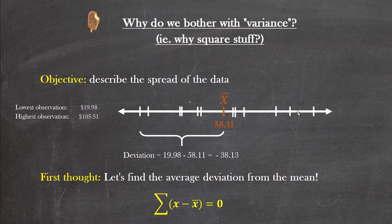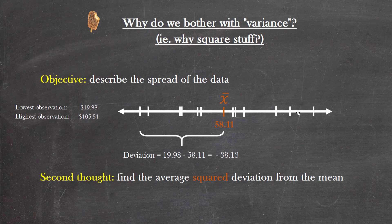Okay, so that's not going to work. So what can we do instead? Well, here's a second thought: let's find the average squared deviation from the mean. You only need a very basic understanding of mathematics to appreciate that when you square one of these deviations, like minus 38.13, what happens to it? It becomes positive, right? So squaring that gives us 1453 point whatever, and then we're going to add all of those squared deviations together, which are all now positive, and we can find the average of those squared deviations. And that might give us some numerical measure of the spread of this data set.